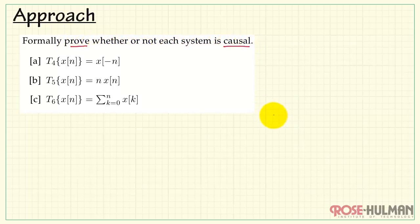Let's take a look at a general approach for establishing a proof like this. When a system is causal, its system output does not depend on future inputs.